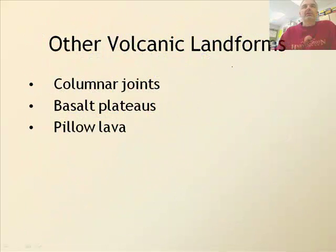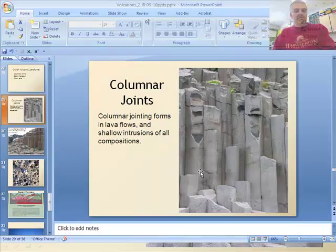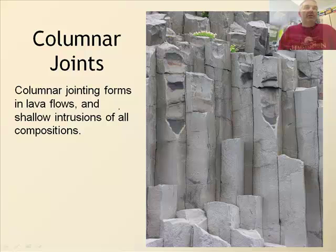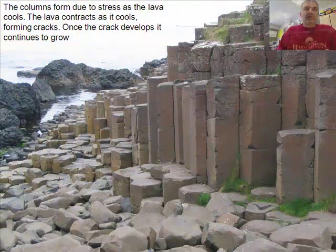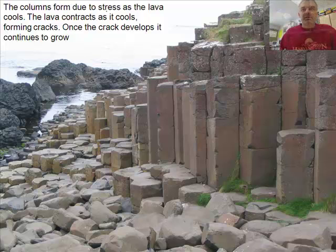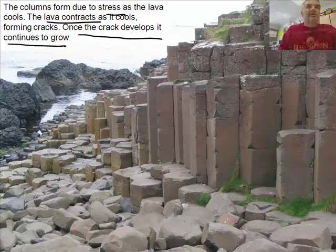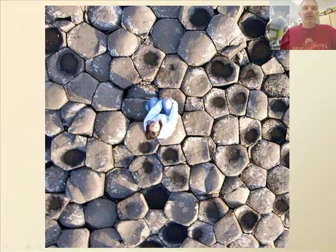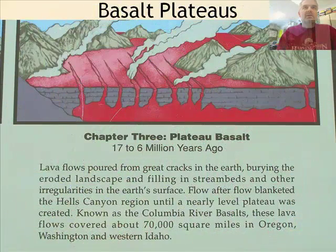Let's look at a few other volcanic landforms. First, columnar joints: these form in lava flows and shallow intrusions of all compositions. They form due to stress — as lava cools, it contracts, forming cracks that continue to grow. If you look down from the top, you can see an almost perfect hexagonal structure. It looks like someone built it, but it's completely natural.